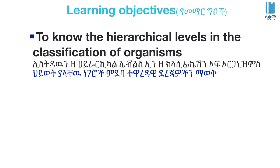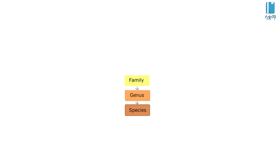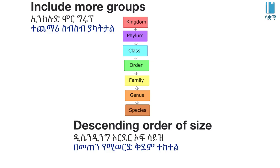Hello everyone, welcome to this video about the scientific naming of organisms. We will learn about the scientific name system introduced by Carl Linnaeus — the binomial system of genus and species, which has been very important as the scientific naming convention in science.